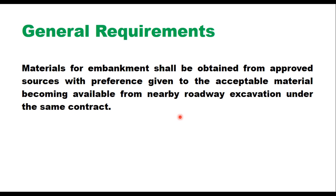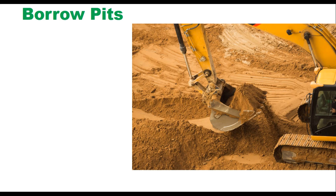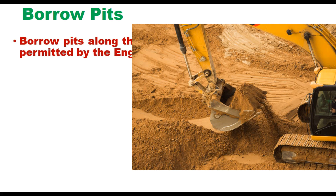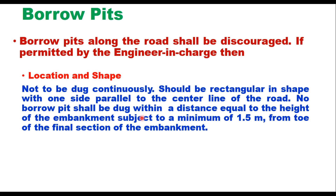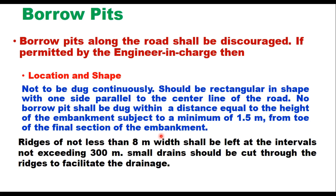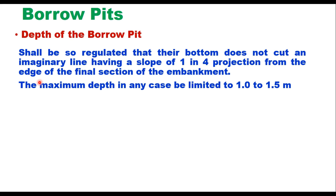Material is taken from the borrow pit — pits dug along the road alignment for taking soil for embankment construction are known as borrow pits. Borrow pits along the road shall be discouraged; if permitted by the engineer in charge, they should not be dug continuously and should be rectangular in shape with one side parallel to the centreline of the road. No borrow pit shall be dug within a distance equal to the height of the embankment, subject to a minimum of 1.5 meter from the toe of the final section of the embankment. Ridges of not less than 8 meter width shall be left at intervals not exceeding 300 meter, and small drains should be cut through ridges to facilitate drainage. Depth of borrow pits should be regulated so their bottom does not cut an imaginary line having a slope of 1 in 4 projected from the edge of the final section of the embankment, and maximum depth should be limited to 1 to 1.5 meter.